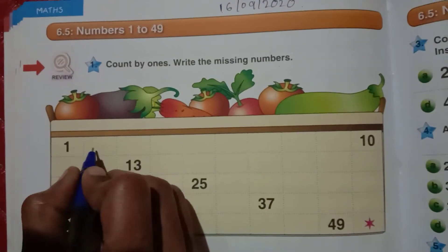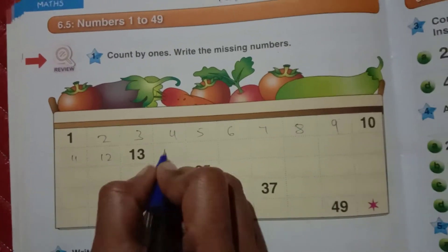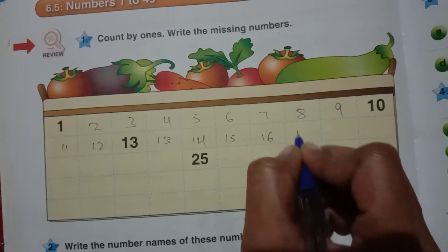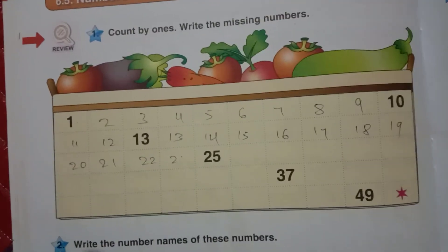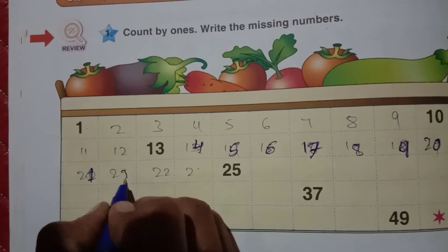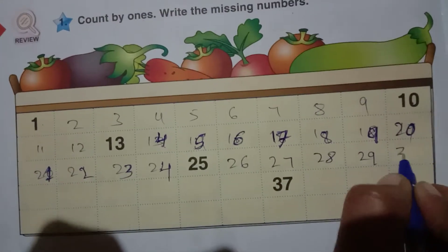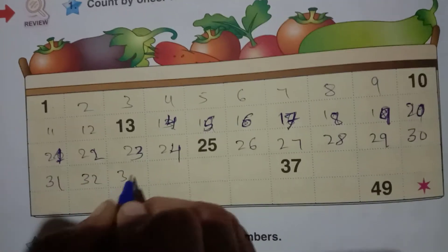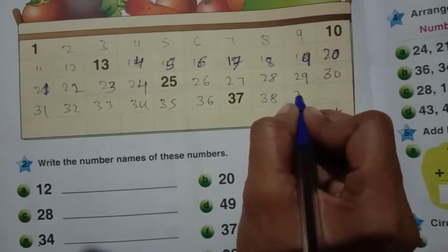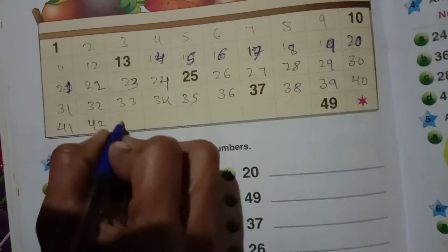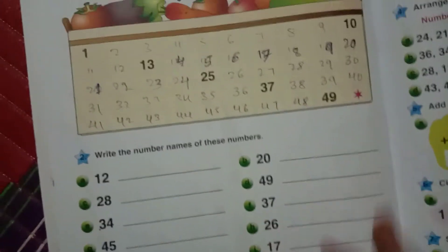Okay, let us start. 1, 2, 3, 4, 5, 6, 7, 8, 9, 10, 11, 12, 13, 14, 15, 16, 17, 18, 19, 20, 21, 22, 23, 24, 25, 26, 27, 28, 29, 30, 31, 32, 33, 34, 35, 36, 37, 38, 39, 40, 41, 42, 43, 44, 45, 46, 47, 48, 49.